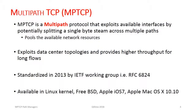MPTCP provides the capability of exploiting all available interfaces, splitting a single byte stream across them, and pooling available network resources to provide greater throughput. This is especially useful in data centers and provides for high throughput as well as shorter flow completion times. It was standardized in 2013 by the IETF Working Group and appears as RFC 6824, which provides a detailed description of MPTCP connection establishment, subflow initiation, and MPTCP options. MPTCP is available in Linux kernel, FreeBSD, and various Apple operating systems.